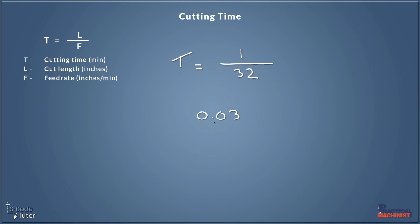Now that is minutes. So it's 0.03 of a minute. And if we times that by 60 to give us it in seconds, we would get an answer of 1.8 seconds. So a really quick feed rate and a really quick time to cut. It would only take 1.8 seconds to machine one inch length at a feed rate of 32 inches per minute.